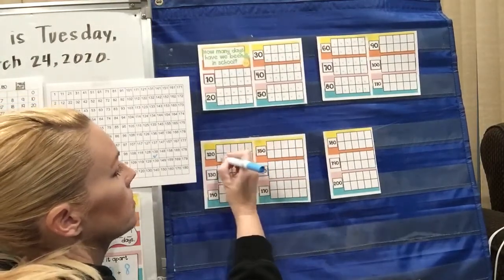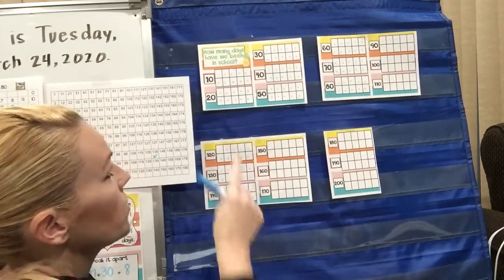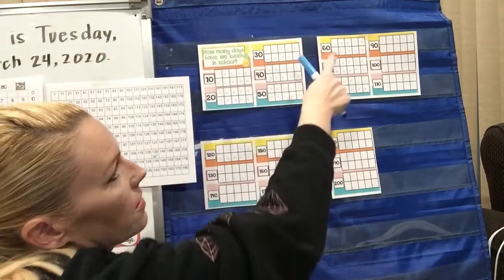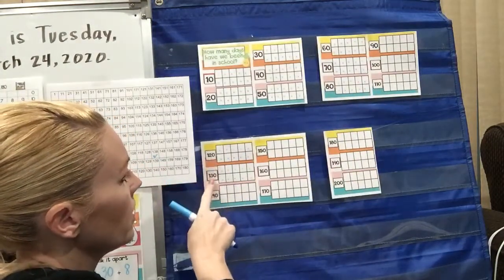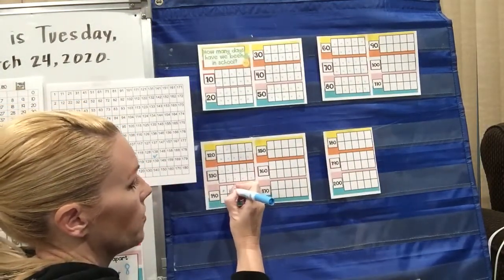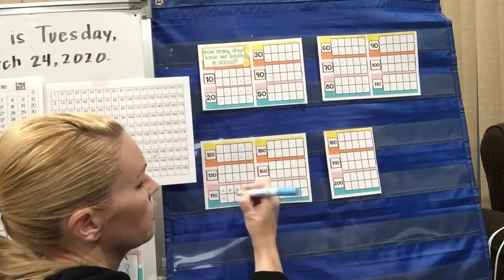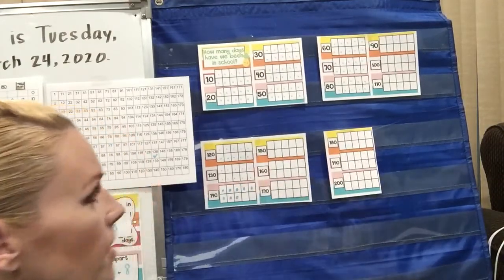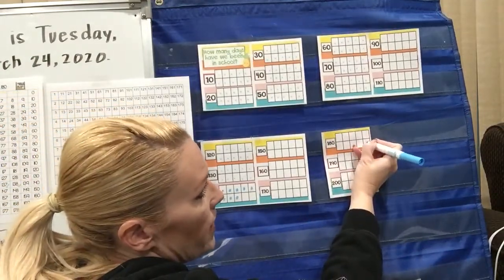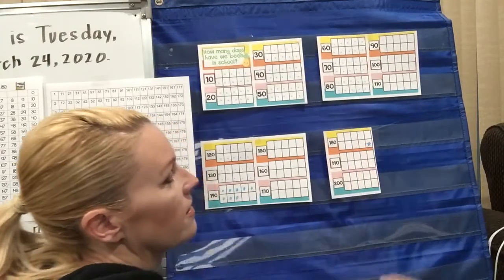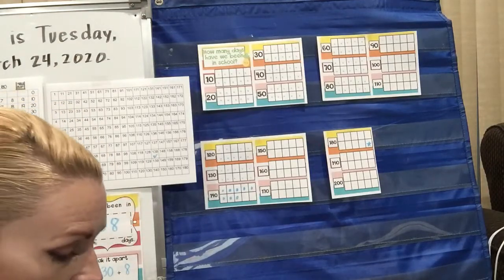So I'm almost to 130: 10, 20, 30, 40, 50, 60, 70, 80, 90, 100, 110, 120, 130, 131, 132, 133, 134, 135, 136, 137, 138. And I think you'll notice this actually goes all the way to 200 — but right here, I'm going to put a star. That's our last day of first grade. So there you go — there's our calendar and our days of school for today.